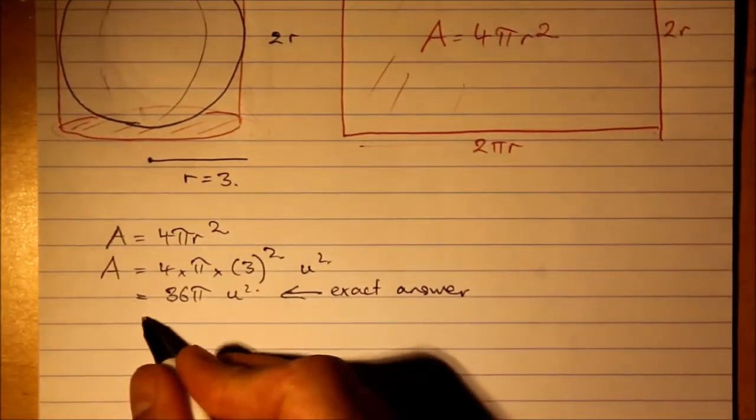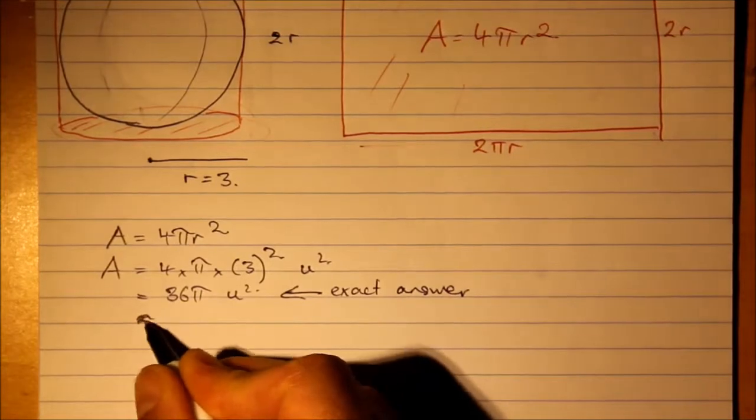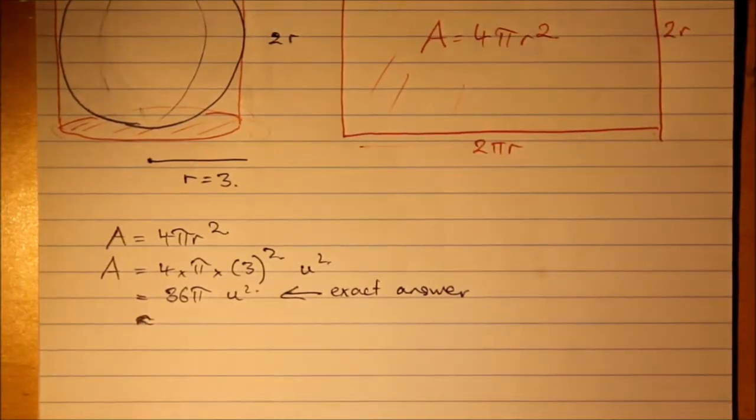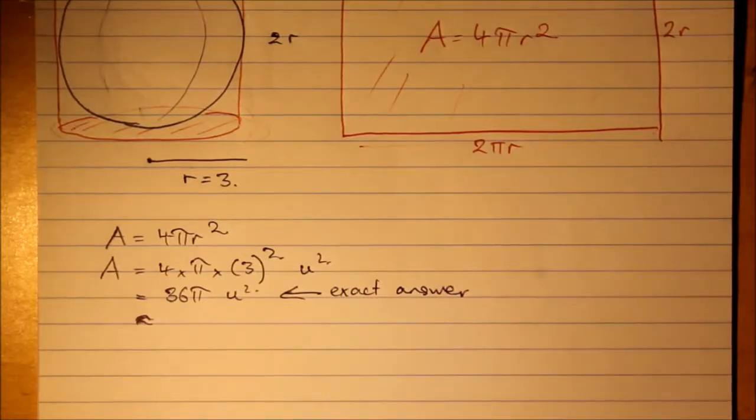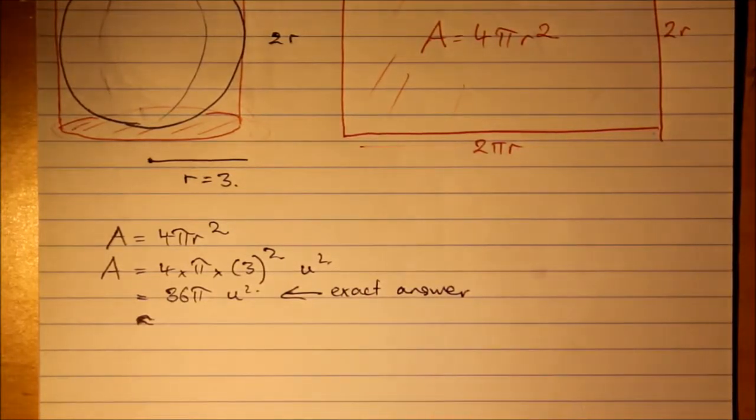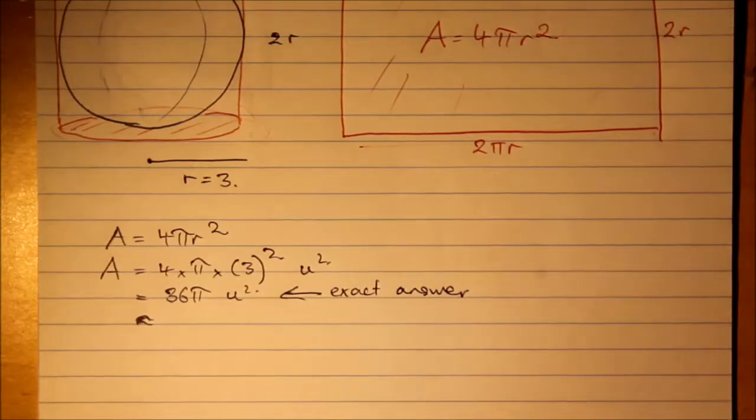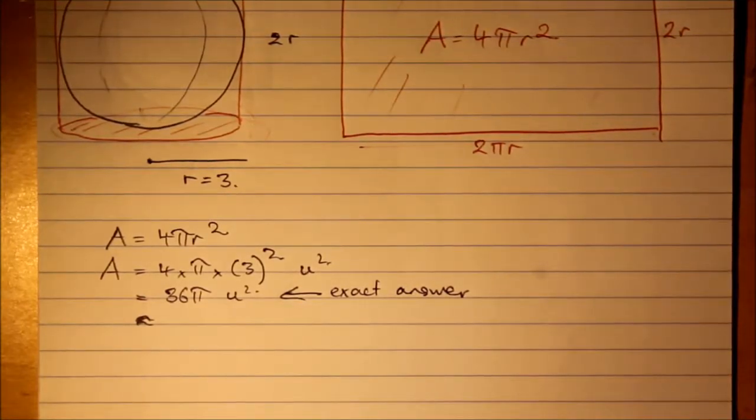Let's just round this to one decimal place. So let's put an approximate answer. Now again, thinking what should it be? Well, 36 times 3. A little bit more than 100. 110 perhaps. Let's have a look.